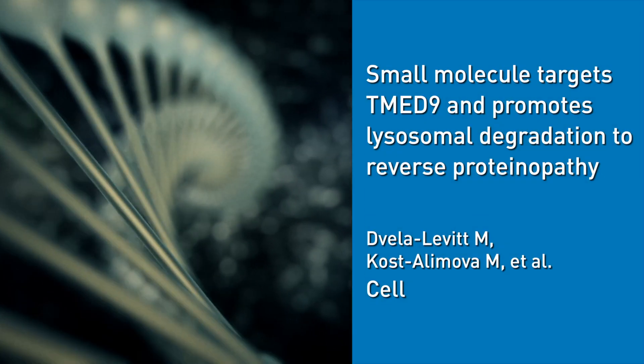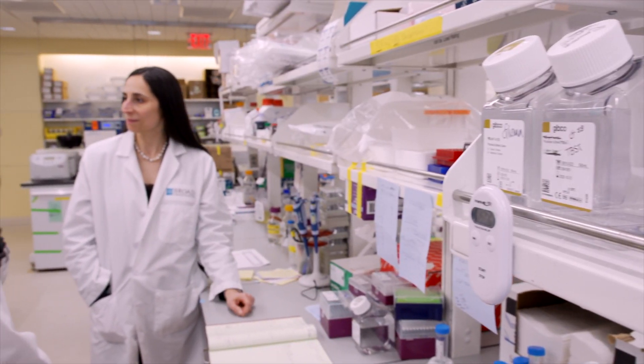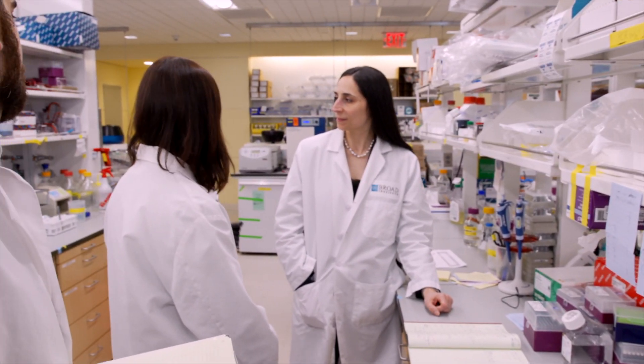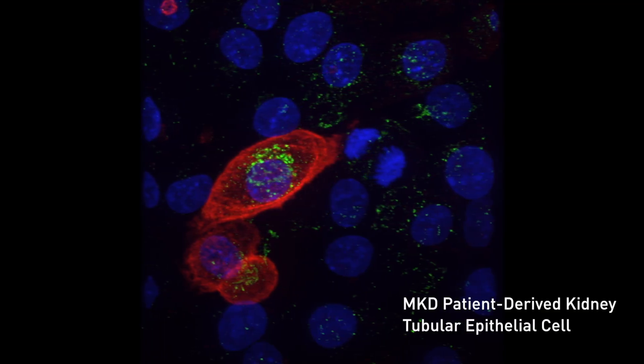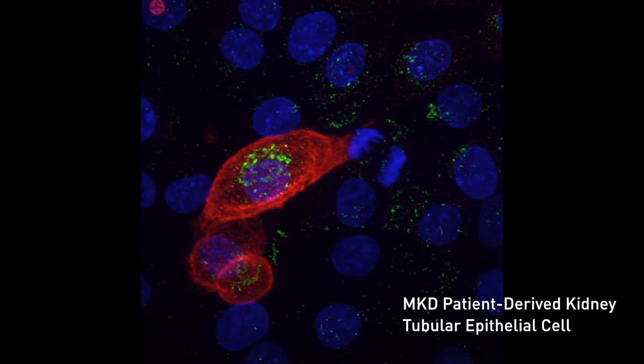Mucin-1 kidney disease is caused by a mutation in the Mucin-1 gene. It is a single insertion, usually of a cytosine, in the VNTR region of this gene. It causes a frameshift and an early stop codon before the transmembrane domain, which basically results in a toxic neoprotein.